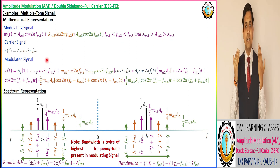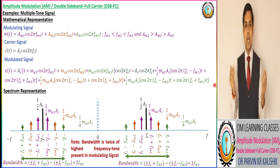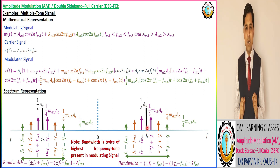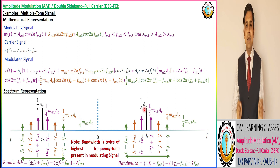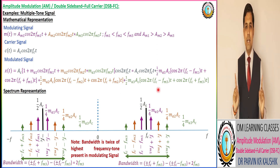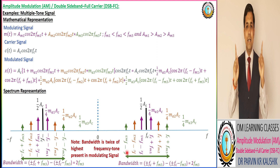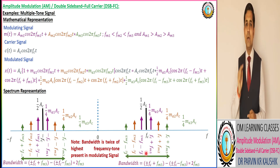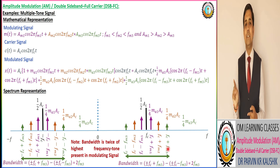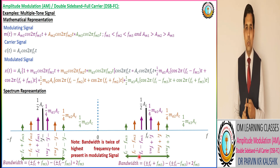As per the modulating signal, carrier signal, and modulated signal, we have the multi-tone spectrum representation. From this diagram and the particular color coding, we get one important outcome: the bandwidth of an AM multi-tone signal is twice the highest frequency component present in the modulating signal. So the bandwidth of AM is equivalent to 2 × FM3, because FM3 is the highest frequency component present in the modulating signal.